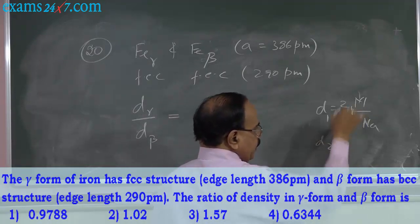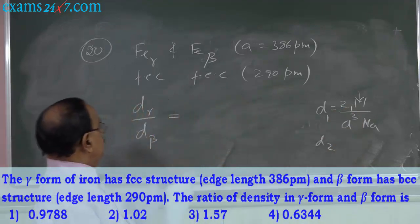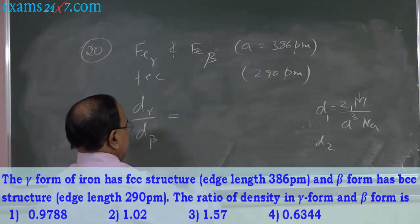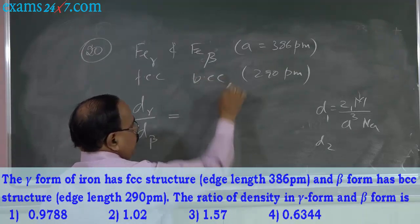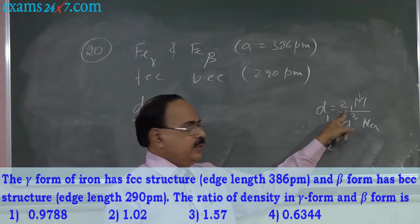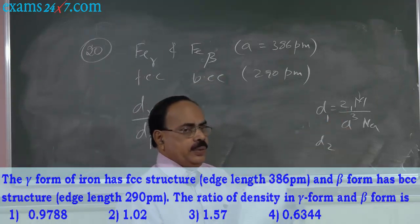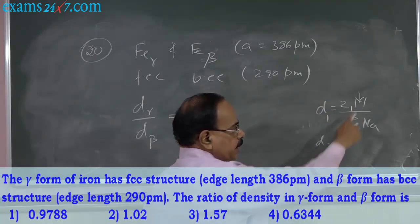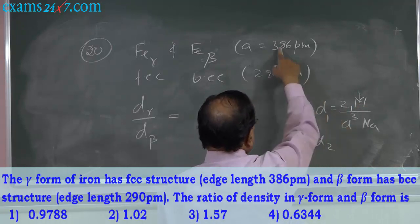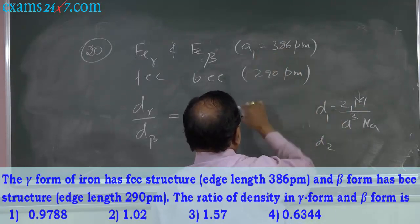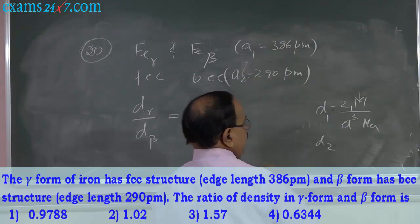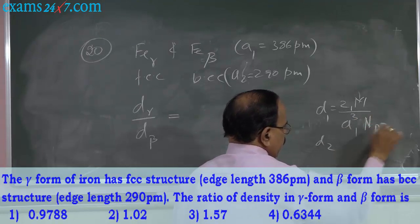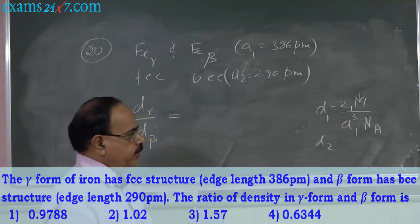D1 can be written — it has Z1 because D1 is FCC. D2 means beta form, which is BCC. Z means the effective number of particles are different. Therefore, D1 = Z1 × M / (A1³ × NA), where M is the atomic mass of iron — it is the same for both — and NA is Avogadro's number, which is also constant.